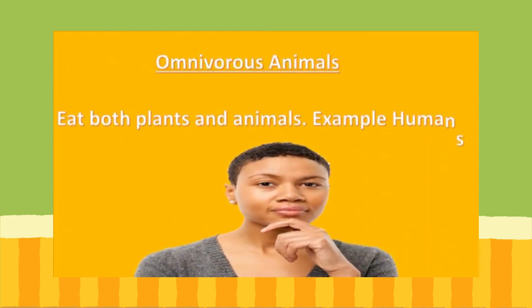Now we are looking at omnivores. Omnivores eat both plants and animals. For example, humans are omnivores — we consume both plants and animals. We eat cabbage, a plant, and we also eat chicken or fish, which are animals. So, omnivores eat both plants and animals.